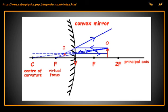All three construction lines should cross at the same point to give you the image point location.